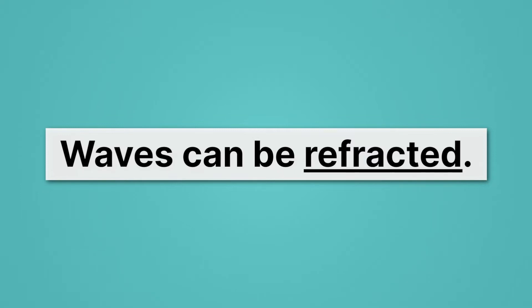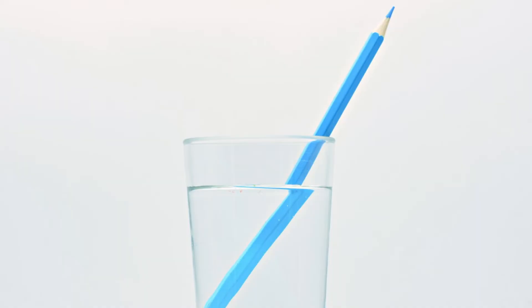Well, take a look at this pencil. We know the pencil's straight, but it almost looks like it's been chopped in half there in the middle. What's going on? This is an optical illusion. As the light travels from the pencil, through the water and glass, and out into the air, it's bent. So light exiting the glass is bent.